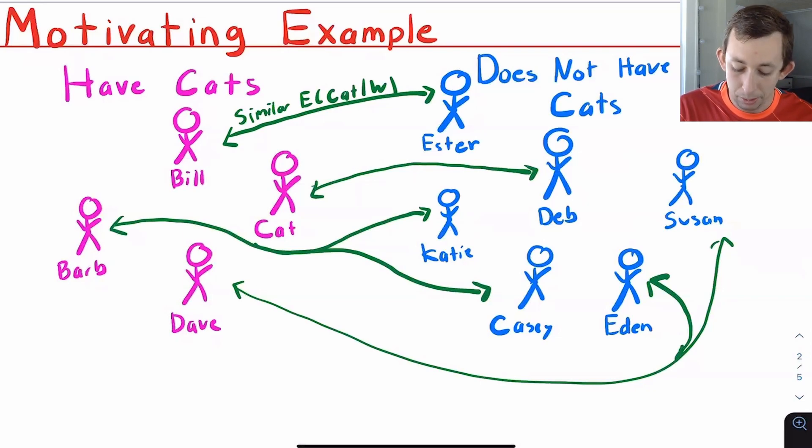And maybe Dave also has two people he's super similar to, both Eden and Susan. So we're going to pair Dave to both of those people. Maybe we'll just take an average of these two people's stress level and call that Barb's counterfactual. Maybe we'll take the average of Eden and Susan's stress level and call that the counterfactual for Dave. We're going to use these counterfactuals to estimate the treatment effect for each of these people. Then we can take the average treatment effect and we'll get the average treatment effect of owning a cat on your stress level.